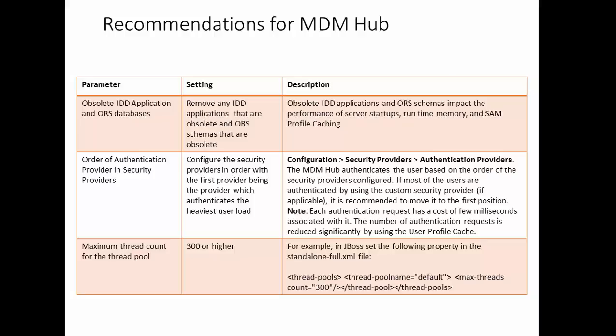Next is the order of authentication. If you are using LDAP or any other external authentication in your organization, make sure you configure the security provider with the first security provider being the one that authenticates the highest volume of users. Each authentication request has a cost of a few milliseconds, and the number of authentication requests is reduced significantly by using the user profile cache.